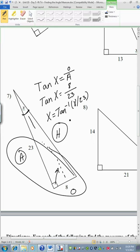And that will give me second tan of 8 divided by 23. Hopefully it's a tiny little angle, it's not too bad. x equals 19.2 degrees.